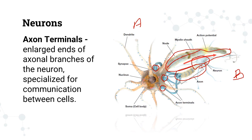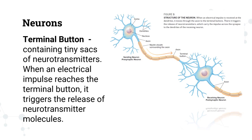These axons are covered by myelin sheets. Researchers in neuropsychology discovered that these myelin sheets enable information to travel faster along the axon — it makes it easier for the information to travel along the length of the axon. Once the information reaches the end of the axon, it will reach the terminal buttons or the axon terminals.